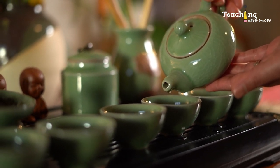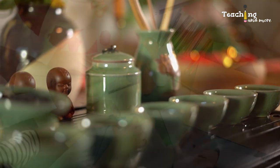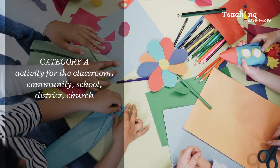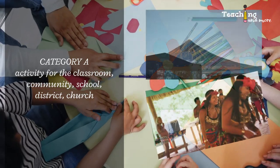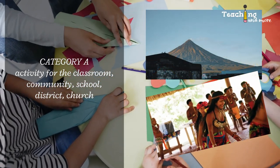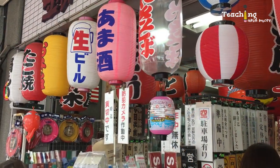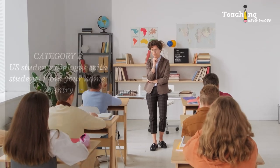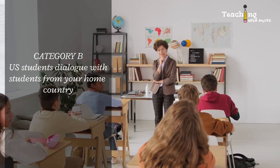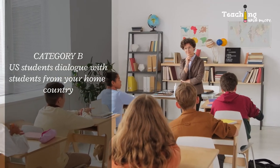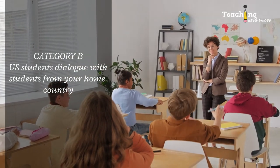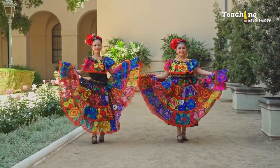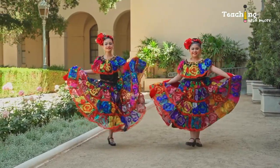Every J1 teacher must complete, during the academic school year, one or more activity of each of the following cross-cultural categories. Category A is an activity for the classroom, school, or school district designed to give an overview of the history, traditions, heritage, culture, economy, educational system, etc. of his or her home country. Category B is an activity that involves U.S. student dialogue with schools or students in the exchange teacher's home country. You must conduct at least one activity for both categories A and B each school year while you are in the program.